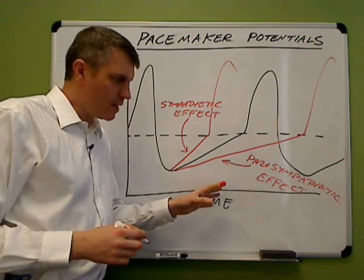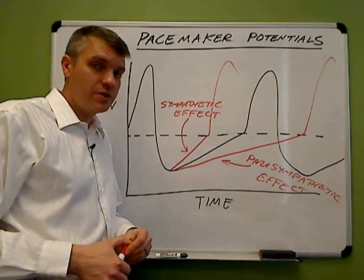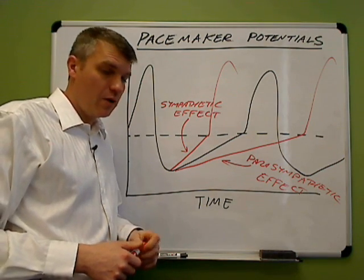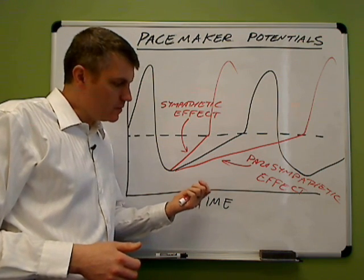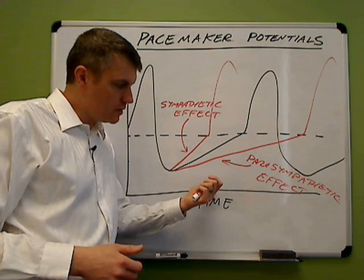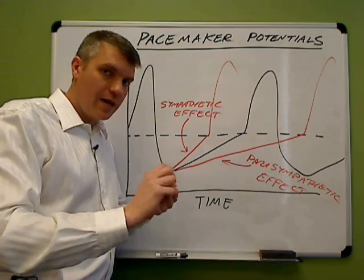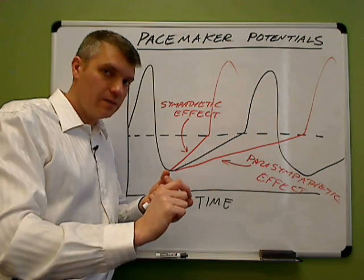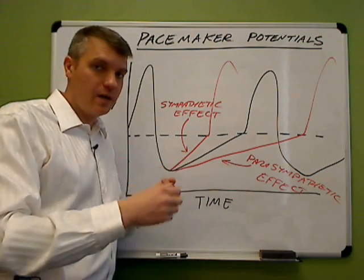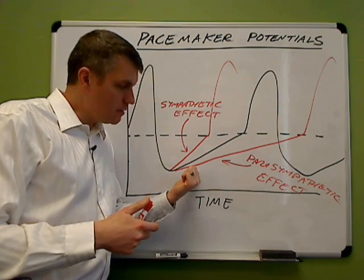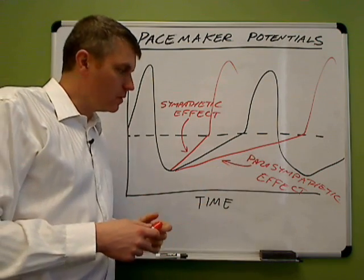For parasympathetic effect, the receptor is an acetylcholine receptor — a muscarinic acetylcholine receptor, which is also a G-protein coupled receptor. In this case, when acetylcholine binds to its muscarinic acetylcholine receptor, the G-protein is released from the receptor and it binds to a potassium channel. That potassium channel opens, potassium leaves the cell, and the membrane has a tendency to become more negative. That causes it to take longer to approach threshold.